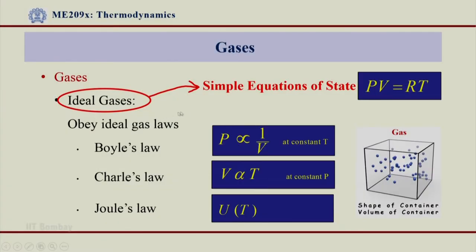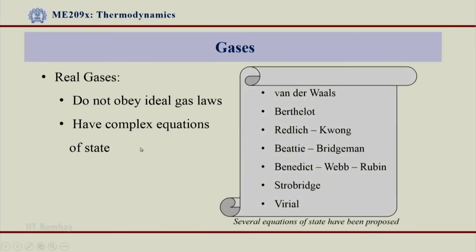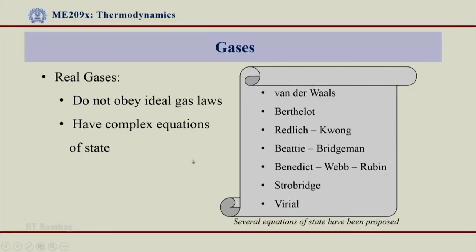If we go away from ideality, we have real gases at very high pressures and very low temperatures. Real gases do not obey the ideal gas law, and therefore what they have is a real gas law — or complex equations of state. There are various complex equations of state: Van der Waals, Berthelot, Redlich-Kwong, Beattie-Bridgeman, BWR, Strobridge, and Virial. Even if the gas is away from ideality, using these real gas equations I can still compute all the properties of those gases.